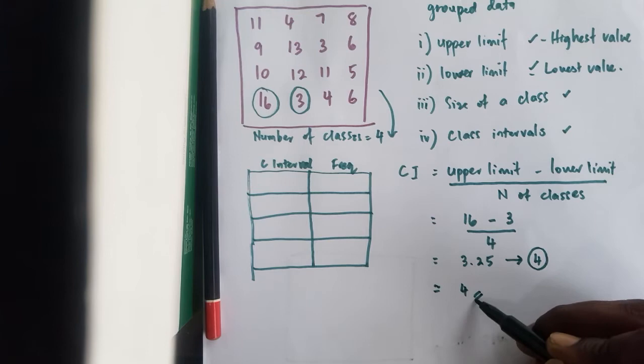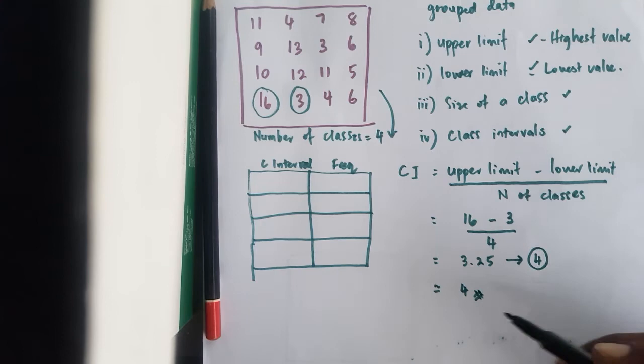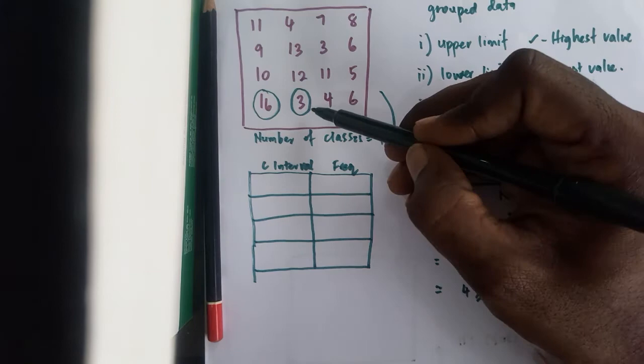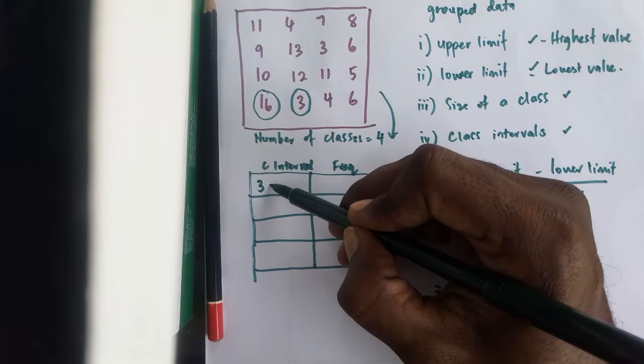4, that will be your value. So what does this mean to you? So what you do now is, you take this 3, you start from your lower limit, 3,